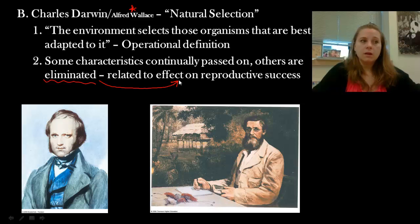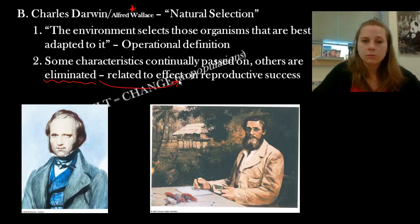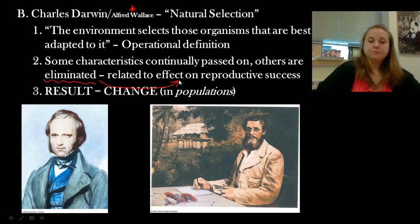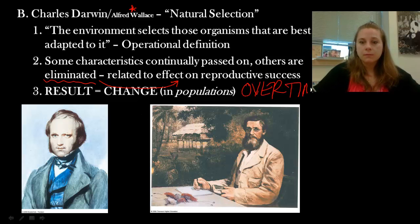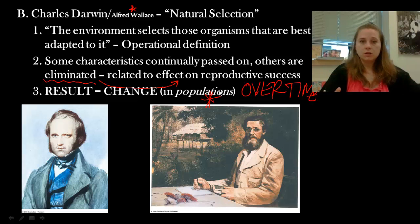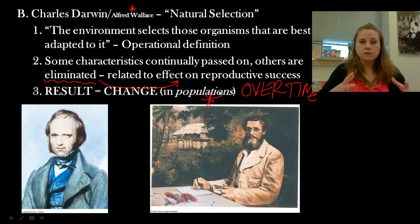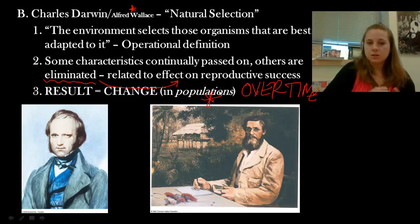Some characteristics get continually passed on if they stay in the person who lives long enough to reproduce. Others get eliminated — and the elimination is a direct result of the reproductive success of the parent. If something makes you less likely to live, like coloring that makes you stand out to a predator, you're more likely to be eaten than to stay alive and reproduce. The result is that over time there is a change to the population. This is where Darwin and Lamarck really vary: Darwin said the population changes, whereas Lamarck talked about it being the change to the individual.